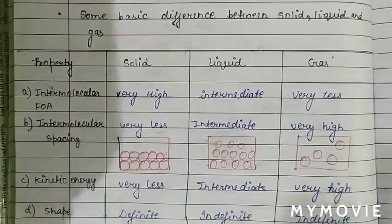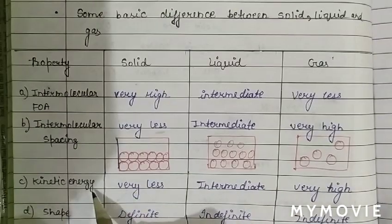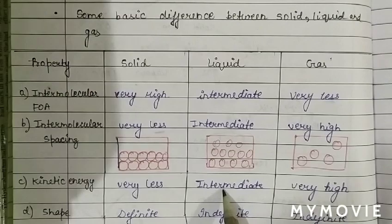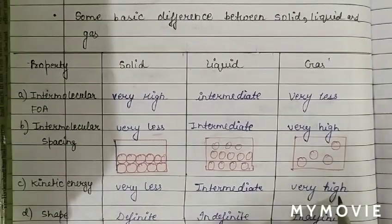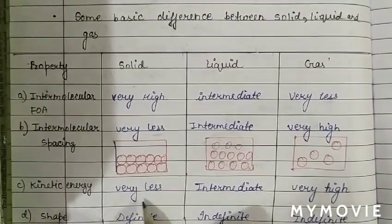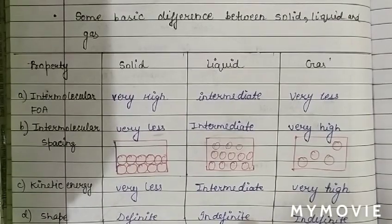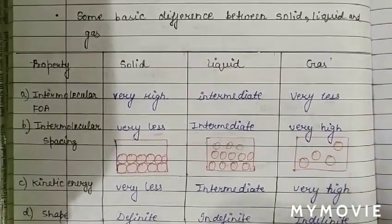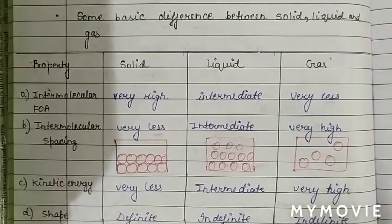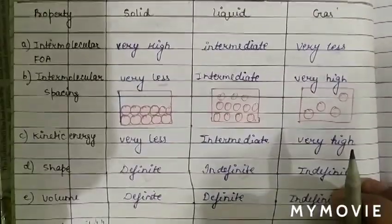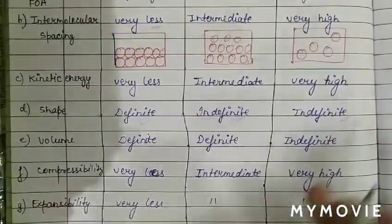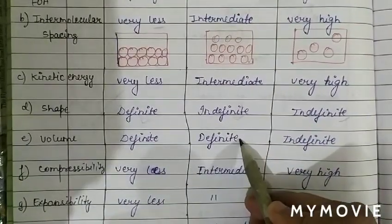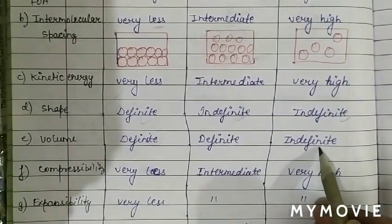The arrangement of particles differs across states. Since particles are not free to move in solids, kinetic energy is less; in liquids it is intermediate, and in gases it is very high. Solids have definite shape, while liquids and gases have indefinite shape. Regarding volume, solids and liquids have definite volume, but gases do not have definite volume.